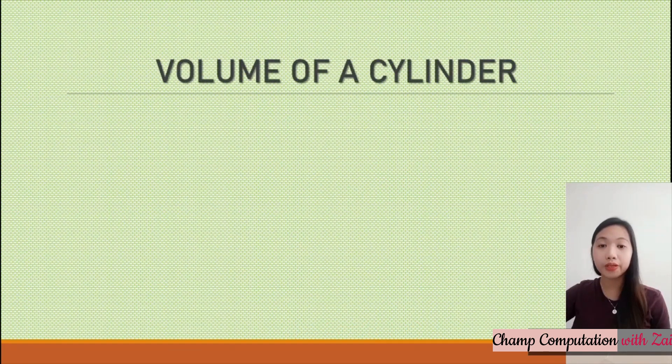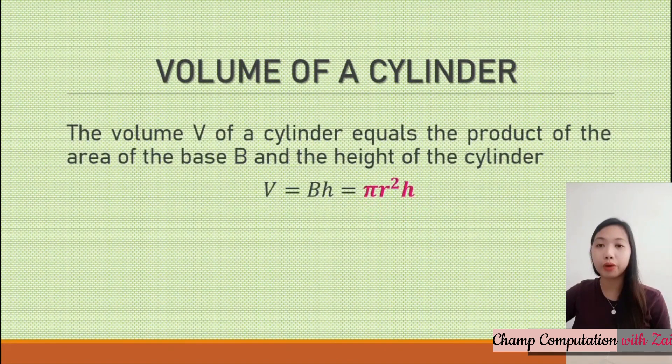For the volume of a cylinder, it equals the product of the base and the height of the cylinder. In symbols, we have base times height. The base can be computed as πr² multiplied by h. So we have πr²h.